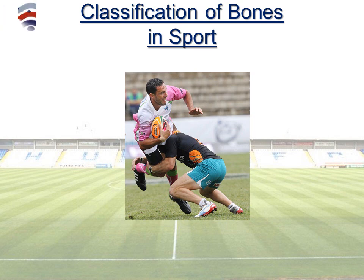We're now going to apply this to sport. Here we have a tackle in rugby, and we're going to focus on the defending player — the gentleman in the black shirt and the green shorts. Identify the four classifications of bones in this picture and explain why those bones are playing such a pivotal role in this tackle. After you've done that, pause the video and I'll reveal the answers.